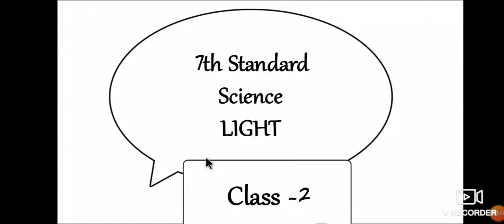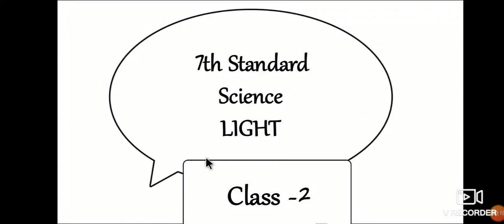Good morning dear students. Today we shall move on to the next concept in the seventh standard science chapter, that is Light. This is the continuous part of the previous class, so this is class two. In this class we are going to study the types of mirrors: plane mirror and spherical mirror.